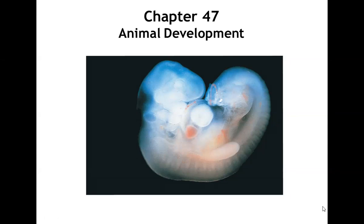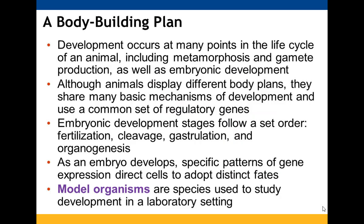Chapter 47 is about animal development. Development occurs all throughout an animal's life cycle — through metamorphosis, gamete production, and to a great extent during embryonic development. There are lots of different body plans, but regardless of the animal, they share a lot of developmental mechanisms. They use a similar set of regulatory genes, and the embryonic development stages follow a pretty set order: fertilization, cleavage, gastrulation, and organogenesis.